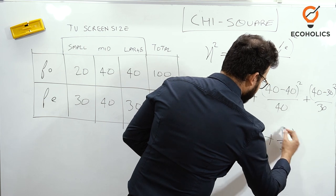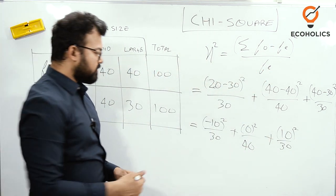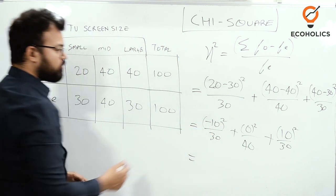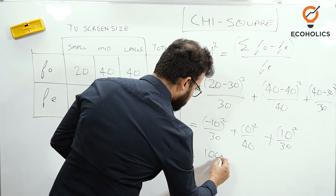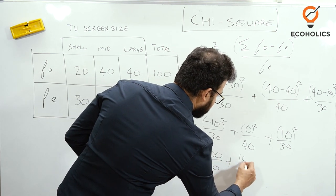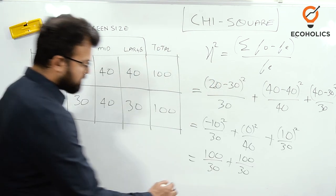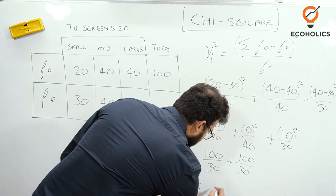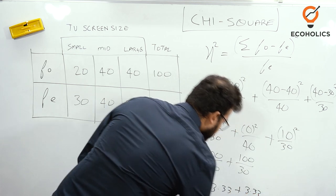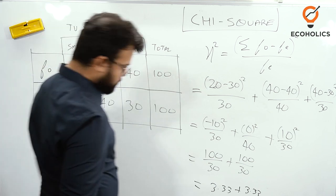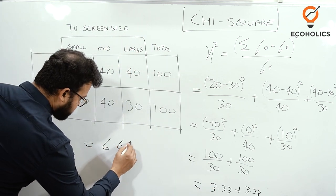Plus here we can say this is also 40 minus 30, so (10)² divided by 30. Now if you do the total of this, when you do the square, the negative sign will vanish. So it's like 100/30 plus 100/30. The answer for this is 3.33 plus 3.33, so the final answer is 6.66.